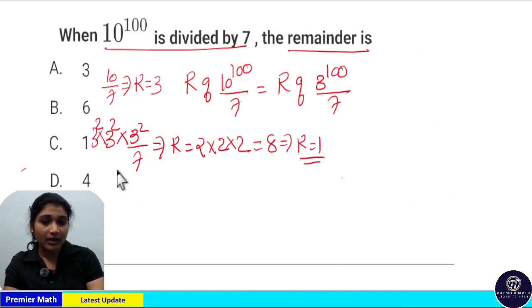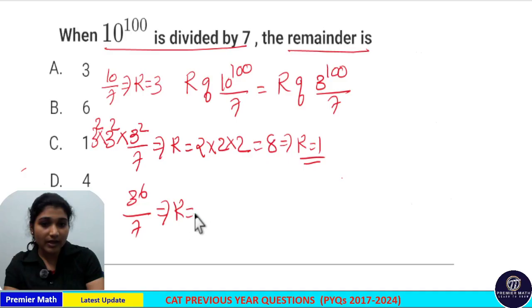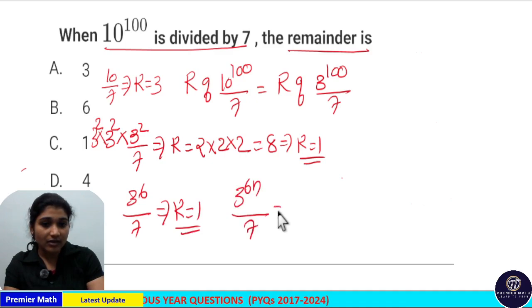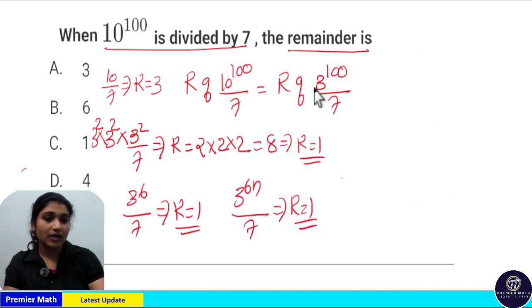So 3 raised to 6 divided by 7 gives remainder 1, meaning 3 raised to 6n divided by 7 will always give remainder 1.